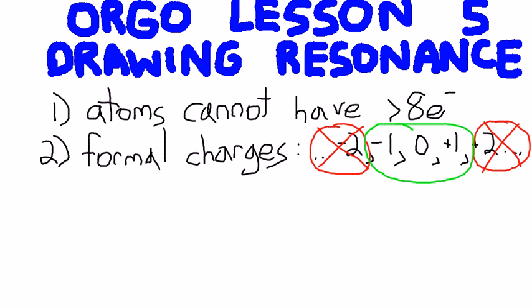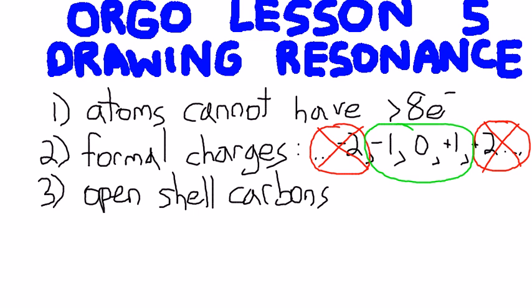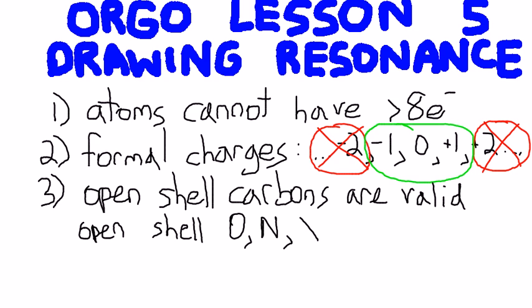So our third rule is that open shell carbons are valid. Meaning that you can have, you are allowed to have them in your resonance structures. However, open shell oxygen, nitrogen, and halogens, they're really uncommon. So it's best, and they're still, you can still draw them, however they're so insignificant, it's better just to avoid them. So O, N, and then X for halogens, these guys are not allowed.